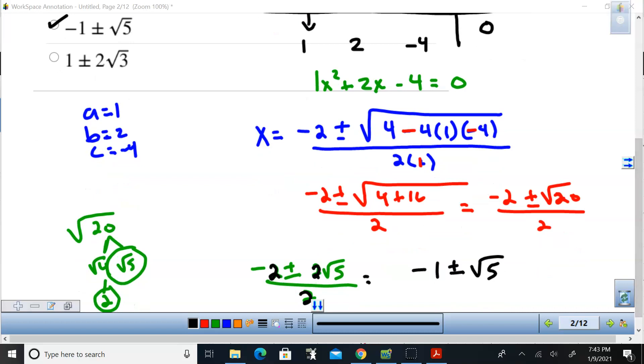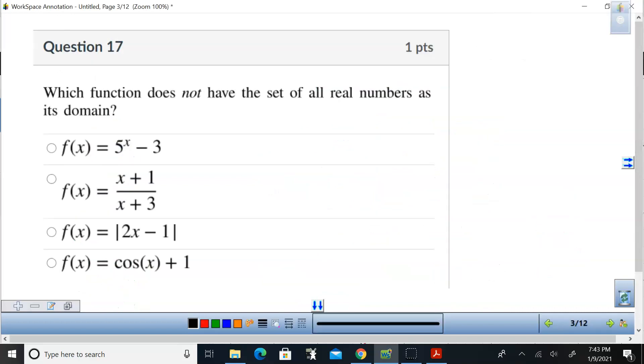So clearly the answer has to be this third option. Alright, so hopefully that made sense to you. Now, number 17 says which function does not have a set of all real numbers as its domain? Well, an exponential function, x can be anything. So my domain is all real numbers. Now for this rational function, you cannot have 0 under the line. So for this one, x plus 3 cannot equal 0. Well, that means x cannot equal negative 3. Well anything but negative 3 is not all real numbers, and so this is the one that would not have a domain of all real numbers. Absolute values would, and trig functions would.